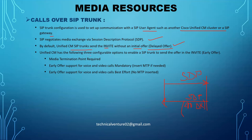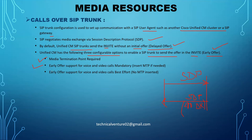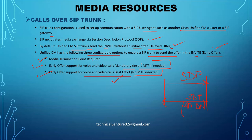Unified CM has three configurable options to enable a SIP trunk to send the offer in the invite as an early offer. The three options are: MTP required — assigns an MTP for every outbound call; early offer support for voice and video calls mandatory — insert MTP if needed; and early offer support for voice and video calls best effort — no MTP inserted. Best effort means if MTP is required it will insert it; if not, it will not insert it. In the mandatory case, if there is a need for MTP, it will surely add it.